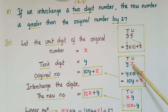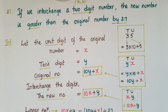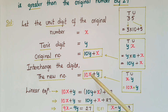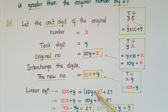Similarly, if we take a two-digit number with tens digit y and unit digit x, it can be written as 10y plus x. So the original number is 10y plus x. If we interchange the digits, the new number is 10x plus y. The given statement says the new number is 27 more than the original, so: 10x plus y equals 10y plus x plus 27.